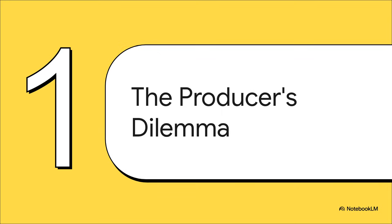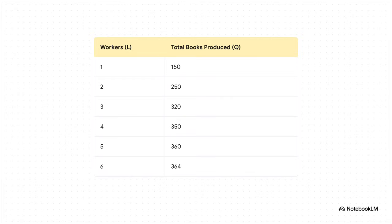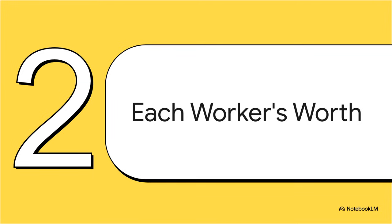To figure this out, let's step into the shoes of a book publisher. It's a simple example, but it's going to show us everything we need to know. This table shows us how many total books get produced as we add more workers. But this doesn't really tell us who to hire, does it? To get to that answer, we've got to understand what each additional worker really brings to the table. How much is each worker actually worth?